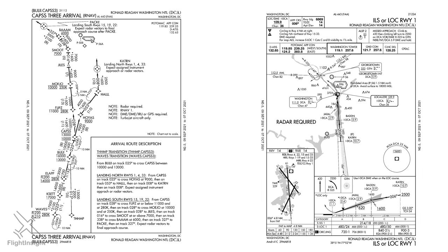Here's one of those approaches — the ILS to Runway 1 at Washington National. National is much too busy to just clear aircraft coming in from all directions at high speeds for this approach. There has to be a way to manage the flow of these arriving aircraft, just as the SIDs do for departing aircraft. This is where the standard terminal arrival procedure, or STAR, comes in.